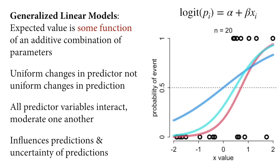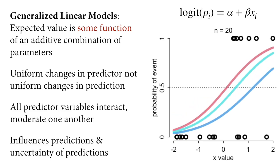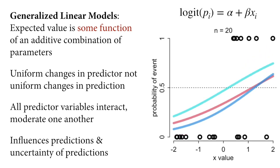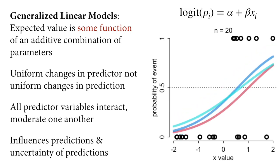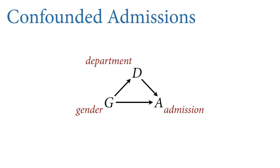The good news is that all the tools you learned up to this point in the course work the same for generalized linear models. You just have to adapt your understanding to them. Your habits are already adapted. Let's pick up with the example from the previous lecture. At the end of the previous lecture, I had just introduced confounds to this example of gender discrimination in graduate school admissions.